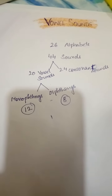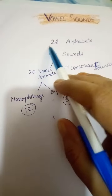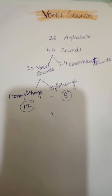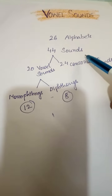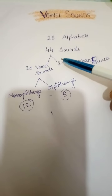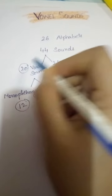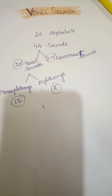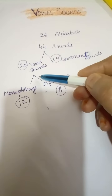Hello students, today we will discuss the vowel sounds. As we all know, there are 26 alphabets in English, and all these 26 alphabets produce 44 sounds. These 44 sounds are divided into two parts: vowel sounds and consonant sounds. There are 20 vowel sounds and 24 consonant sounds.